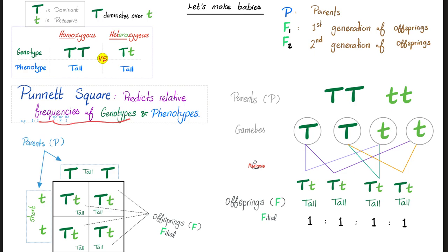So, what's the frequency of the genotypes here? 100%, capital T, small t. What's the frequency of the phenotype? 100% tall individuals.